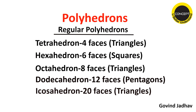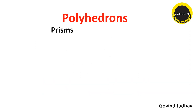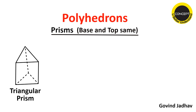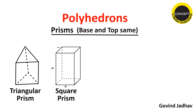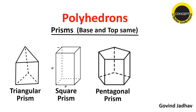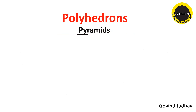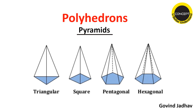Now, prisms. A prism is a solid having the same base and top. If the base is a triangle and the top is also a triangle, the solid is called a triangular prism. If the base is pentagon and top is pentagon, it is a pentagonal prism; base hexagon and top hexagon gives a hexagonal prism. For pyramids, if the base is a triangle and all the corners of the base are connected to a separate point called the apex...